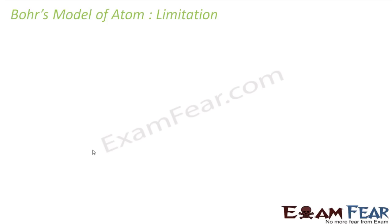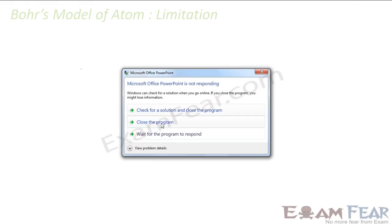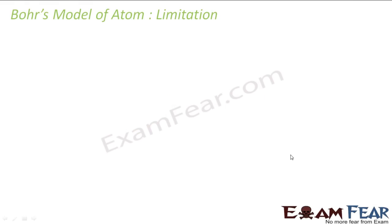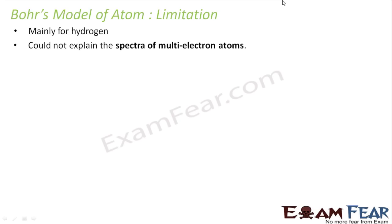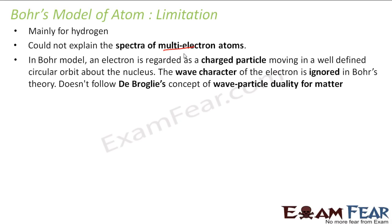Bohr model has a lot of limitations. The first is it was mainly for hydrogen. The second was it could not explain the spectra of multi-electron atoms — it could explain the spectrum of hydrogen atoms very well, but not multi-electron atoms. Also, he assumed electrons as charged particles, so the wave character was completely ignored.